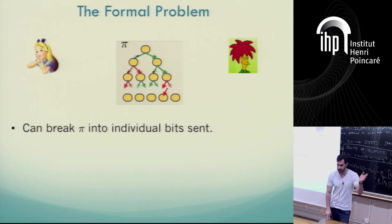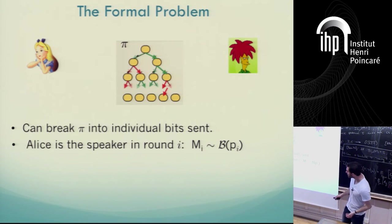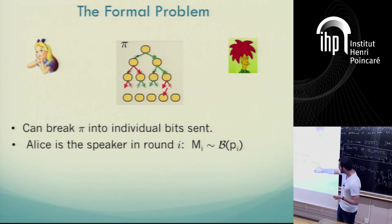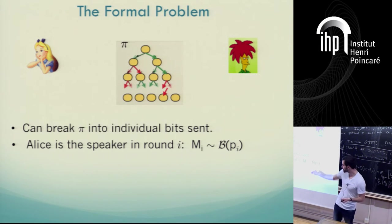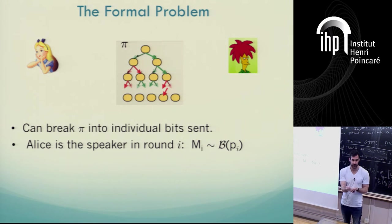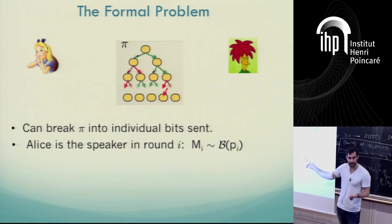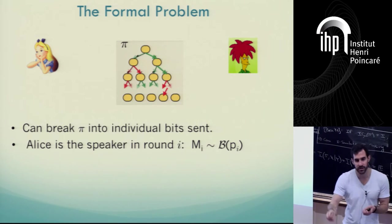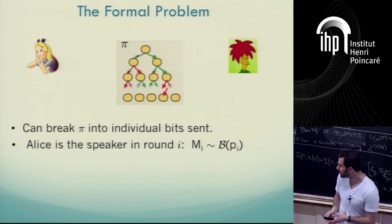Let's define the problem we call the information odometer problem more formally. I claim we can take the entire protocol and break it into individual bits. Suppose the protocol is interleaving and each round each party sends one bit. We can view each message as a Bernoulli distribution of the sender — it's just a bit, a random variable where the randomness is over the private randomness of the speaker.